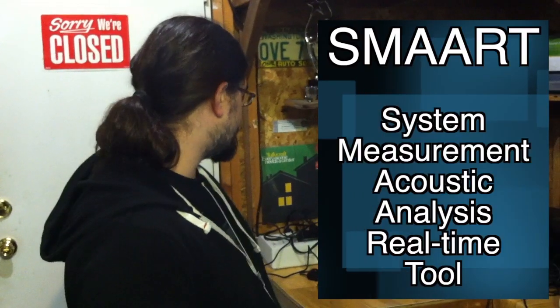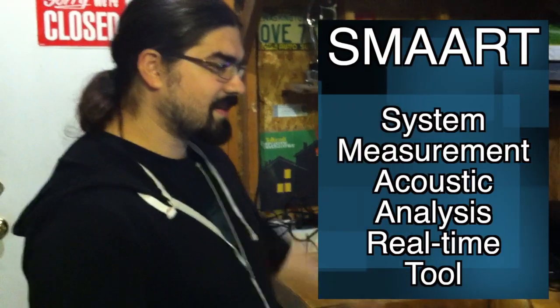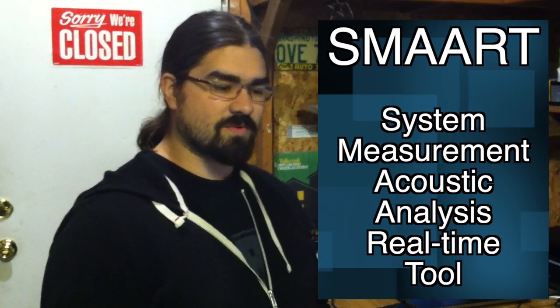We're going to make an EQ preset that works for him to compensate for his room, so when he's mixing he doesn't have to work so hard. We're going to do that today with a piece of software called SMART. SMART is an RTA application that will allow us to see the frequency response of this room with this handy dandy RTA mic. In rooms you're going to have problems with the acoustic environment — whether you have a reflective environment, one that absorbs too much sound, dead spots, or a room that absorbs low end.